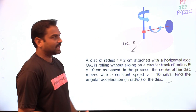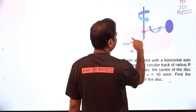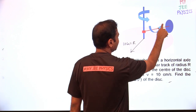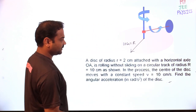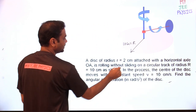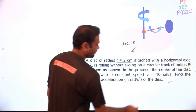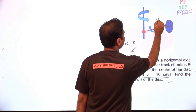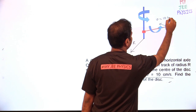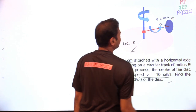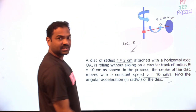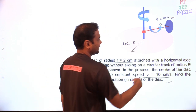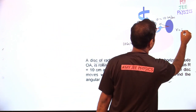So both things will happen — the axle will rotate. This red color axis is rotating with some angular velocity, and the disc is also moving. Different dimensions are given in the question. The radius of the disc is 2 cm, the velocity is 10 cm per second, and the circular track radius is 10 cm.